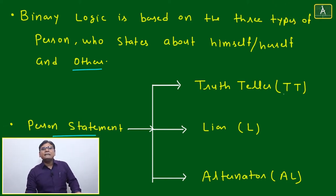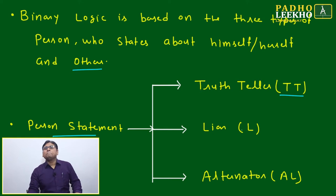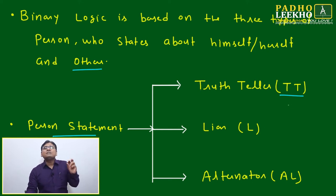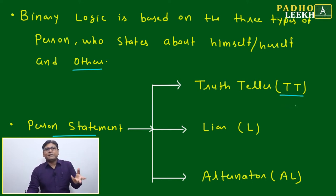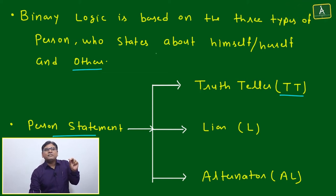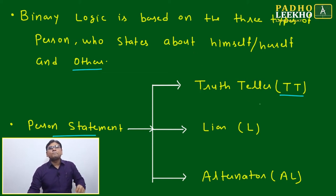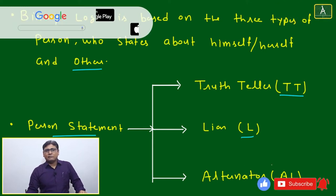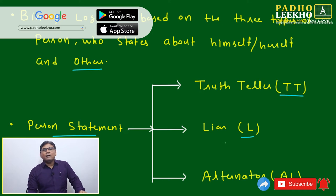Based on that, three types of persons exist in this logic. I am not categorizing people biologically, socially, or by region or religion — I am only categorizing based on the statements they make about themselves or others. The three types are: Truth Teller (TT), Liar (L), and Alternator (AL).